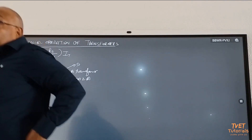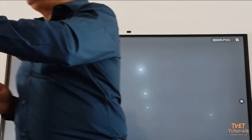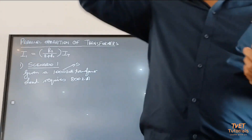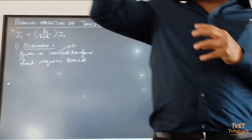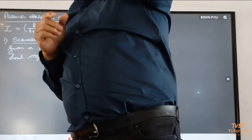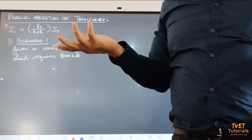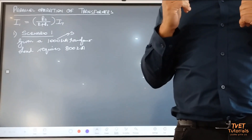A transformer does not necessarily work at full load all the time. To give you a very simple example — in the olden days when we had downlighters, you'll buy a 300 kVA transformer, put it in the ceiling, but you're only using five bulbs. Five times 50 is 250. Can that transformer work? Yes, it can. You're not overloading the transformer. The transformer will be relaxing because it's not working at its maximum capacity.